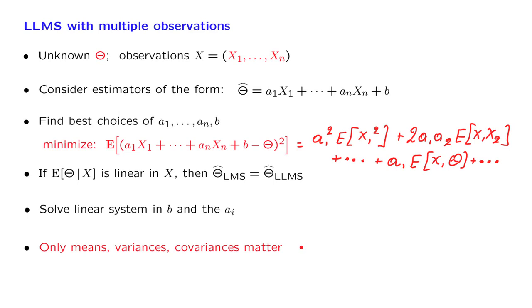Finally, if we do not have just one unknown random variable, but we have multiple random variables that we want to estimate, what should we do? Well, this is pretty simple. You just apply this estimation methodology to each one of the unknown random variables separately.